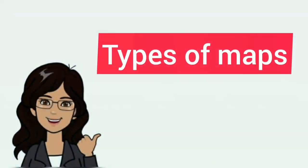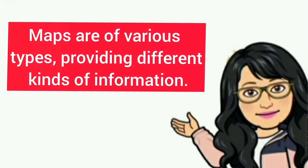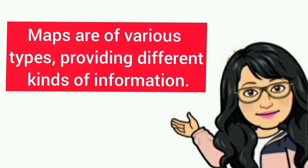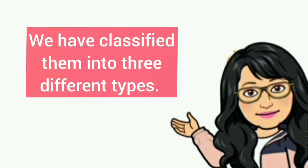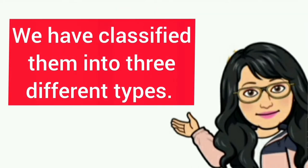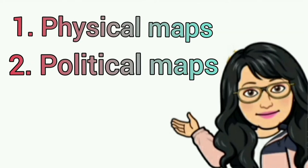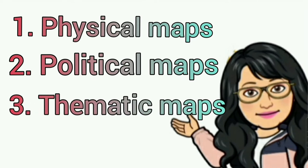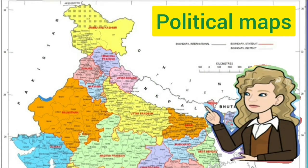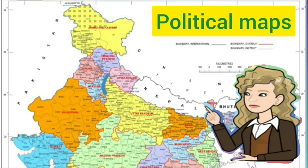Now let us go to the next topic: types of maps. Maps are of various types, providing different kinds of information. On the basis of the information provided, we have classified them into three different types: physical maps, political maps, and thematic maps. Let us know about each type of map in detail.